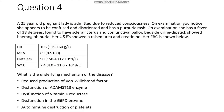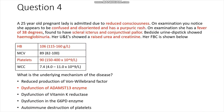Next: a 25-year-old pregnant lady admitted due to reduced consciousness. On examination she appears confused and disoriented with a purpuric rash. She also has a fever of 38 degrees, scleral icterus, and subconjunctival pallor. Bedside urine dipstick shows haemoglobinuria. Her urea and electrolytes show raised creatinine and urea, and her full blood count is shown below. Please pause and state what may be the underlying mechanism of disease here.